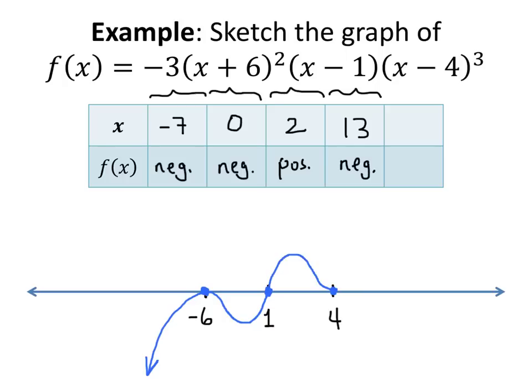And also, because my root has multiplicity 3, my function looks like y equals x cubed there, which means it's going to level out and then cross through the x-axis and go into negative territory. And it can never leave negative territory. It has to be negative forever and ever and ever, because the only place that this function could possibly change sign is at one of these roots.